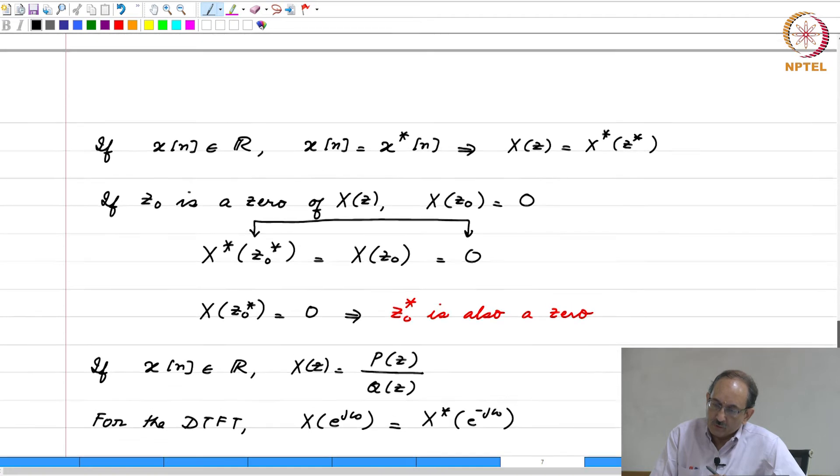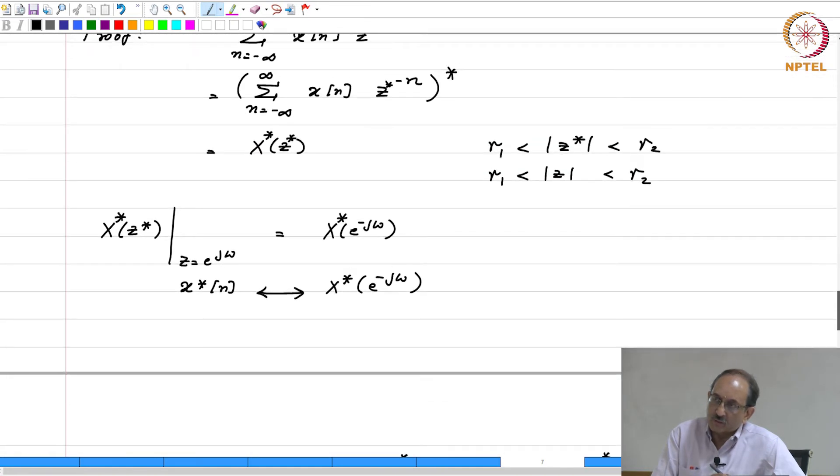That is a good question. You need to exploit the fact that x of z equals x star of z star, right. One fallout of this x of z being equal to x star of z star: if z were real, z star will be the same as z. For real z, x of z will be the same as x star of z. For a real sequence x of n, because x of z equals x star of z star, when the variable z is real, you can conclude that the transform also is real.